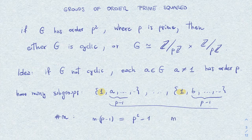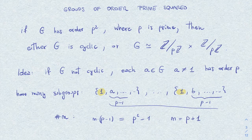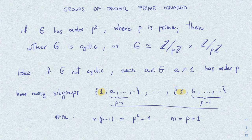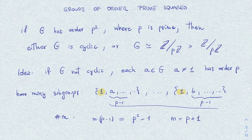So of course, this shows that n is precisely p plus 1. So we have exactly p plus 1 cyclic subgroups of G of order p.